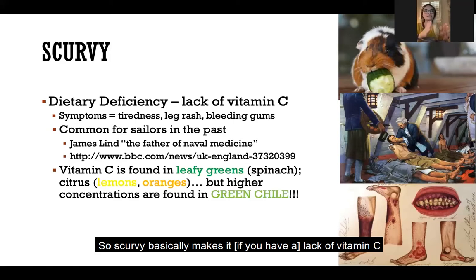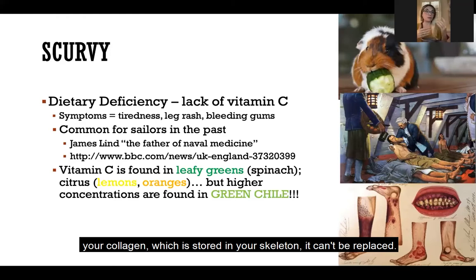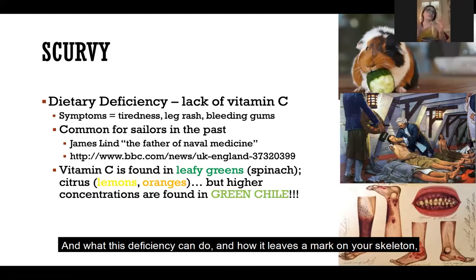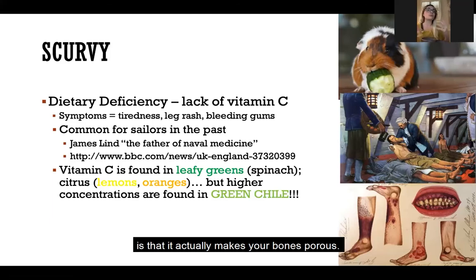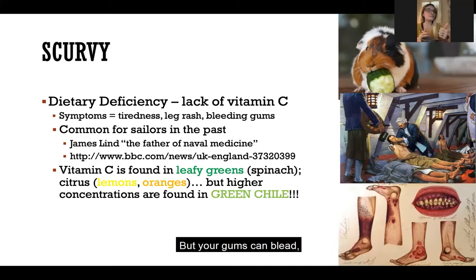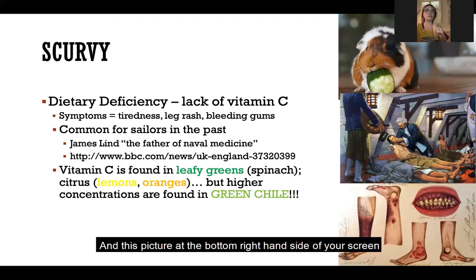Scurvy basically means that if you have a lack of vitamin C, your collagen — which is stored in your skeleton — can't be replaced, leading to a breakdown of your tissues. This deficiency makes your bones porous. Along with that, your gums can bleed, your teeth can get loose, and you can get big sores on your skin. The picture at the bottom right of your screen shows an example from a medical textbook.